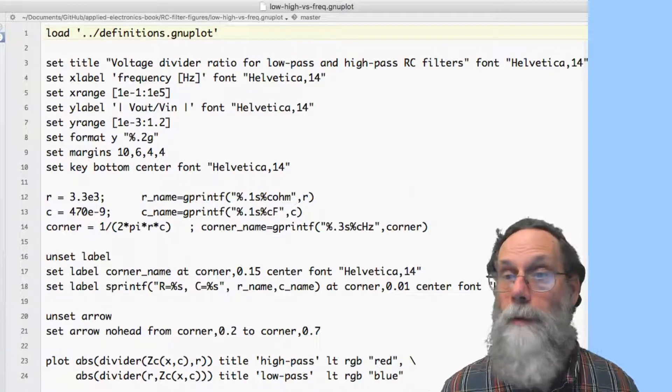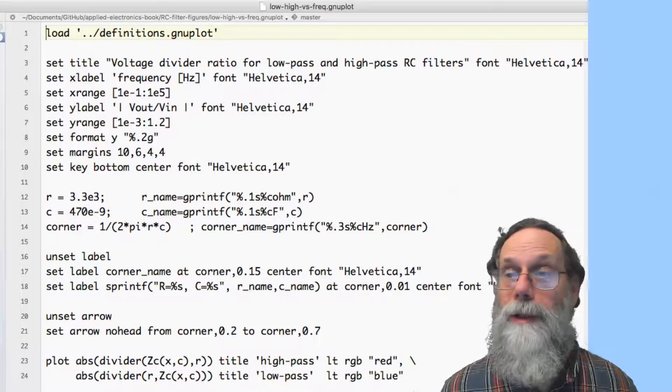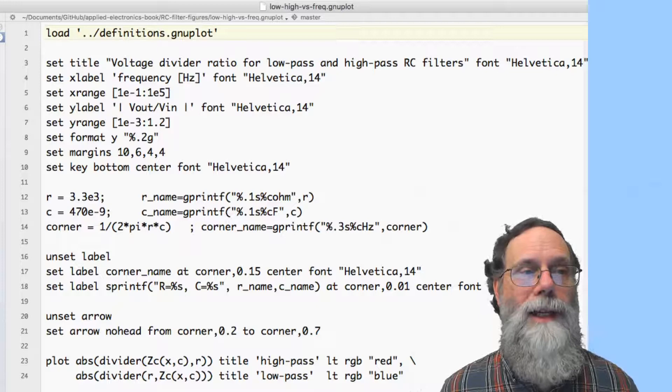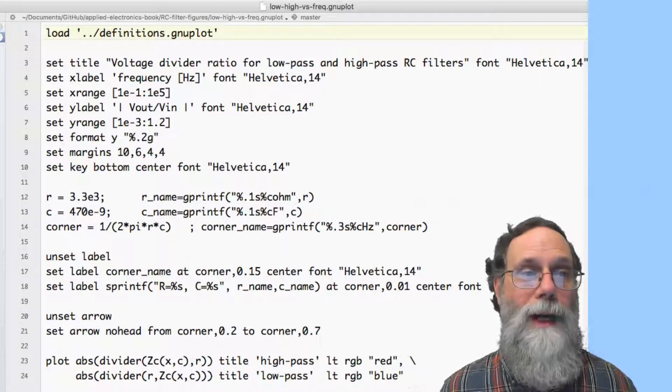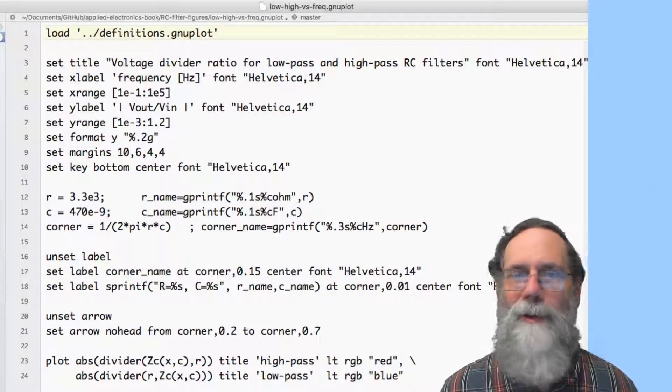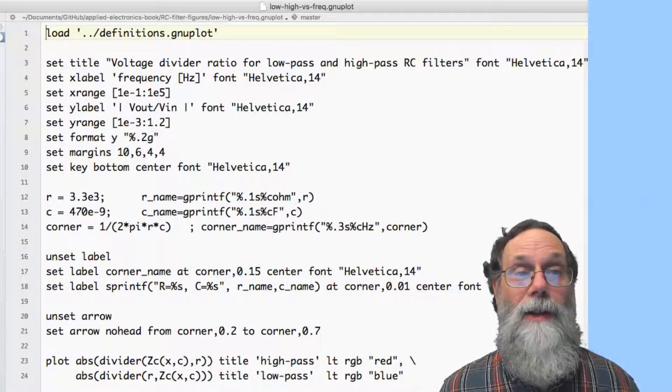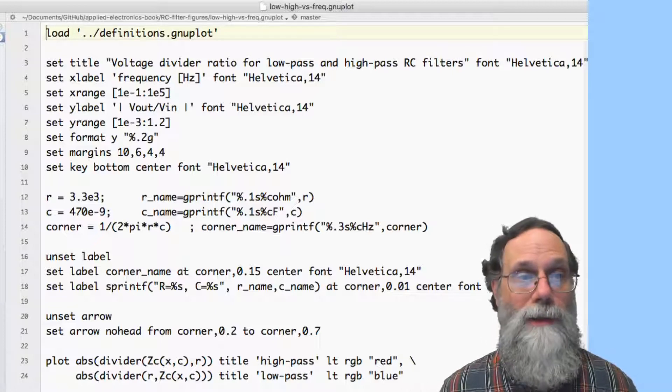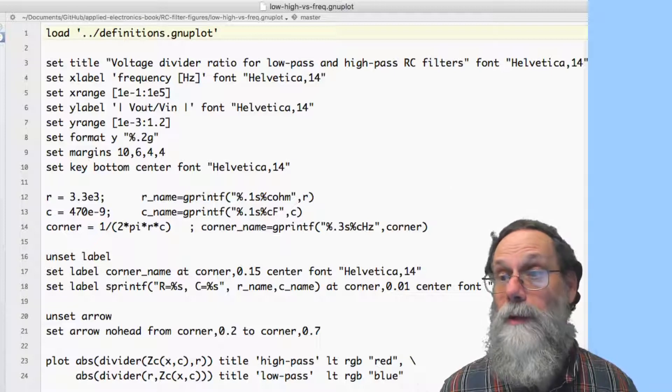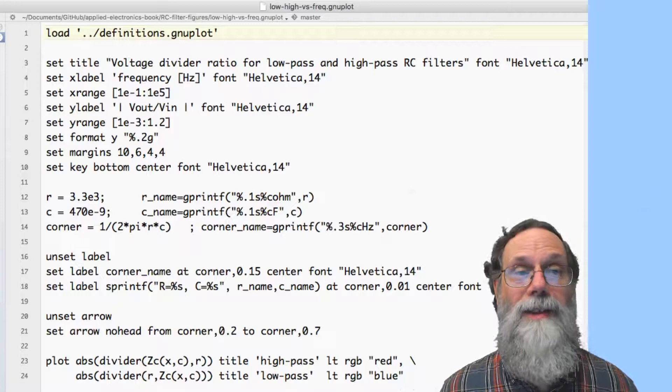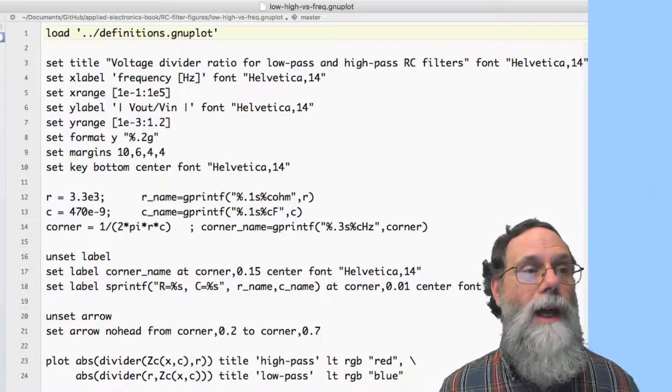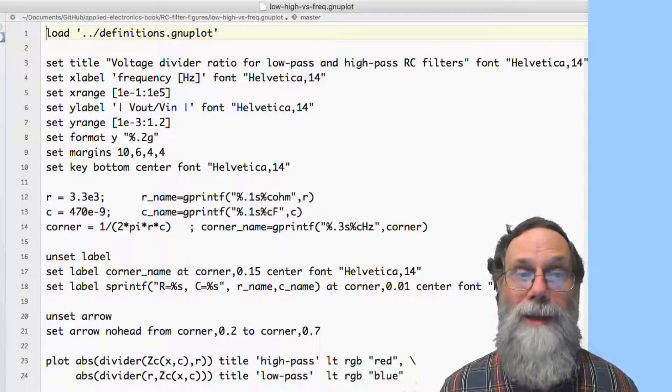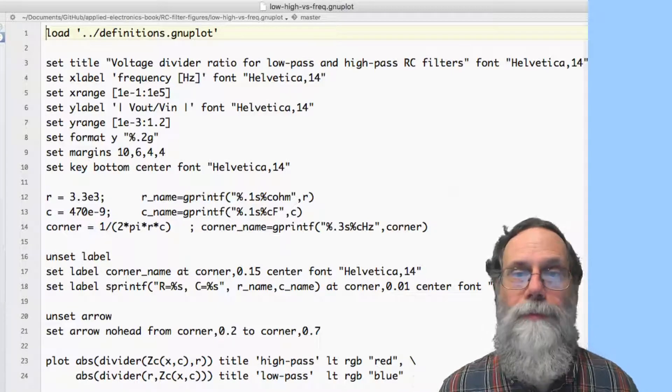Here I have defined two variables, R and C, and given them values. 3.3e3, that's 3.3 kiloohms, and 470e-9, that's 470 nanofarads. Then I created a name for them using the gprintf function, which is something unique to Gnuplot. It's trying to get things into engineering notation. The s puts it into the engineering notation without the exponent, and the c encodes the exponent as a metric prefix. So this would actually come out as 3.3k ohms, which is how we would like to see it on the plot. Here I've computed the corner frequencies, 1 over 2 pi rc. That's the corner frequency.